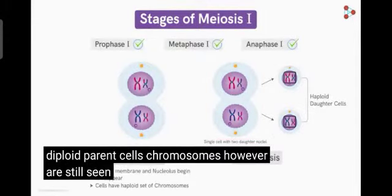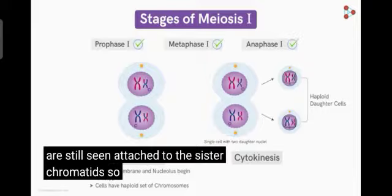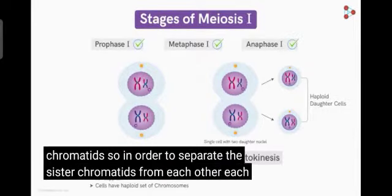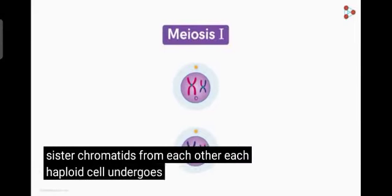Chromosomes, however, are still seen attached to their sister chromatids. So, in order to separate the sister chromatids from each other, each haploid cell undergoes another round of division.